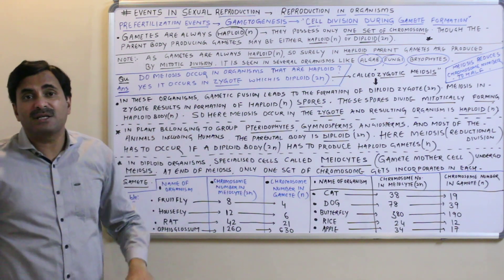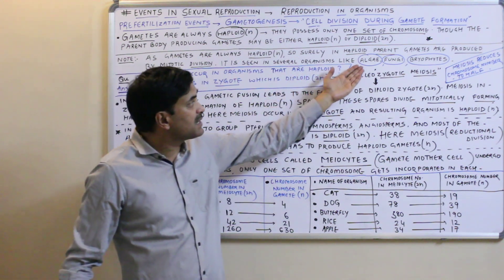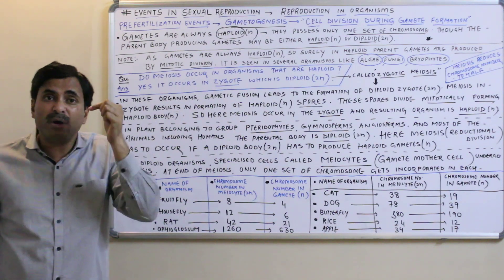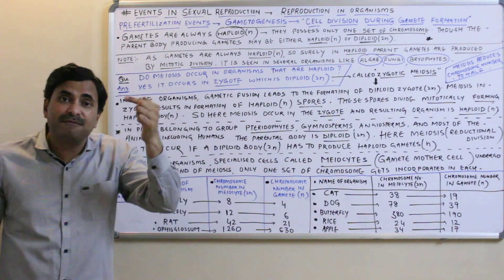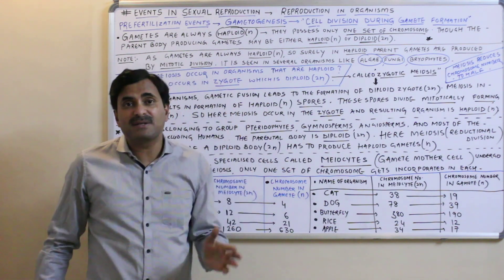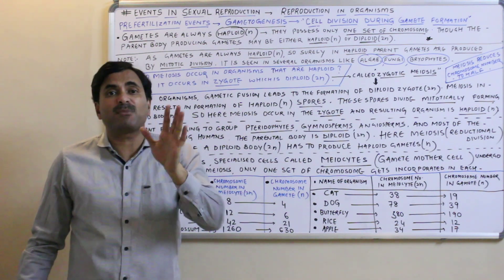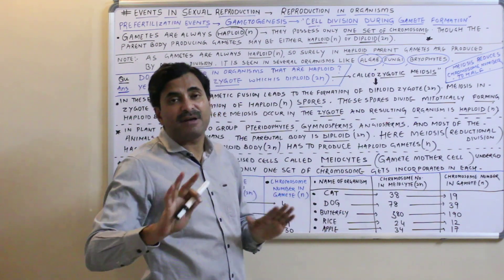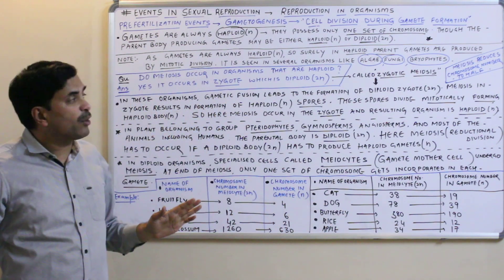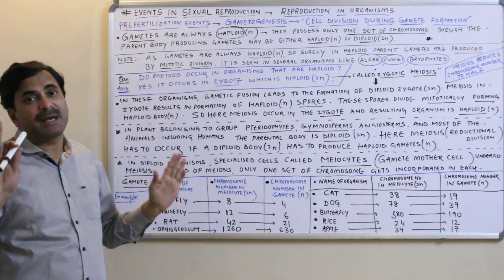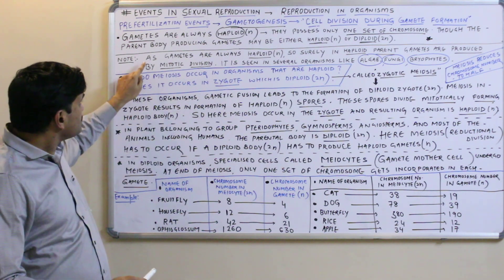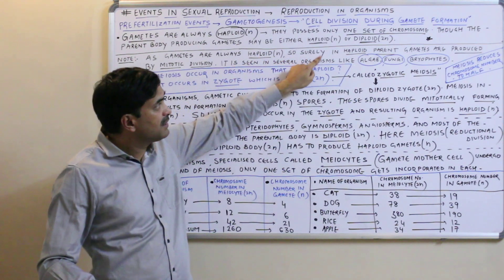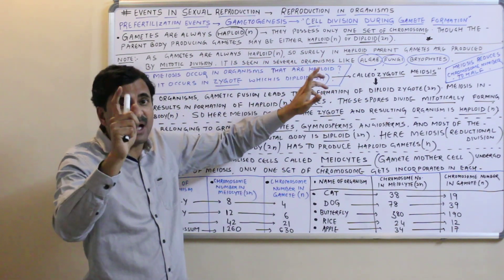There are certain algae, fungi, and bryophytes that have a haploid body. A haploid parent body will always produce haploid gametes, and a diploid parent body will also produce haploid gametes. So gametes formed will always be haploid, whether formed by a diploid or haploid parent. This is asked many times in exams: gametes are always haploid.